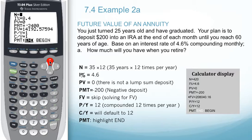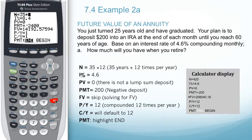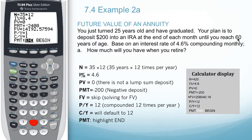Using the information from the problem, N is the number of years, which is 35, times 12, which is the number of compounding periods. We come up with 35 because that would be 60 minus 25.